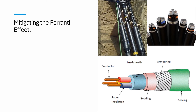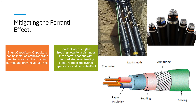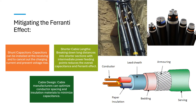Mitigating the Ferranti effect. Shunt capacitors can be installed at the receiving end to cancel out the charging current and prevent voltage rise. Shorter cable lengths: breaking down long distances into shorter sections with intermediate power feeding points reduces the overall capacitance and Ferranti effect. Cable design: cable manufacturers can optimize conductor spacing and insulation materials to minimize capacitance.